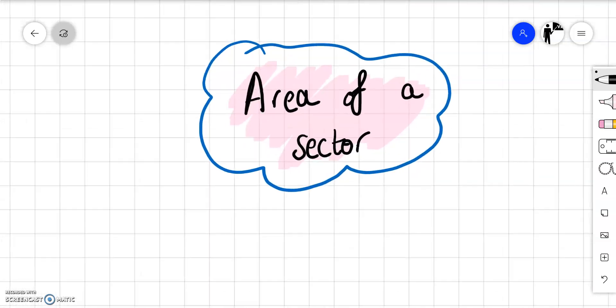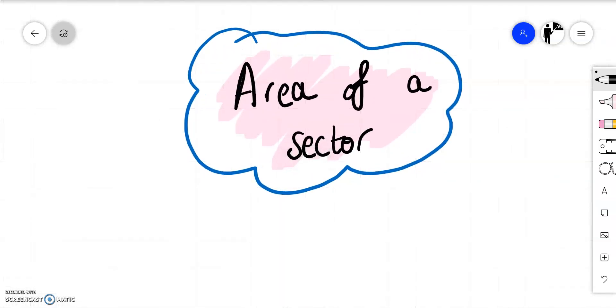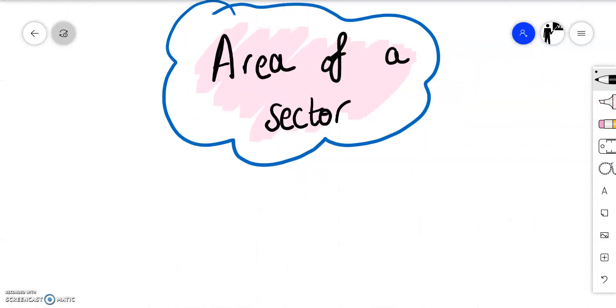In this video we're going to have a look at how to calculate the area of a sector. This is like a section of a circle. We can apply a formula to work out the area of a sector and this is a formula that is often confused with how to calculate the arc length.